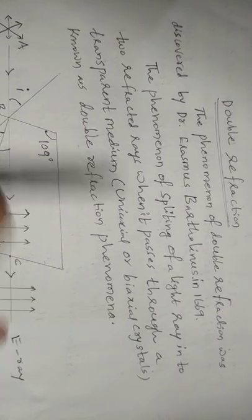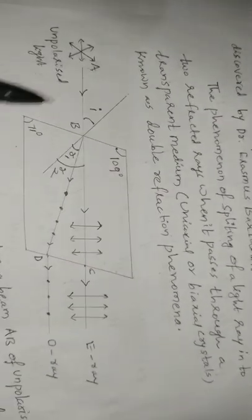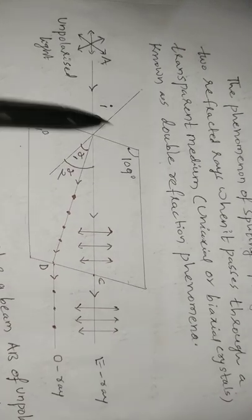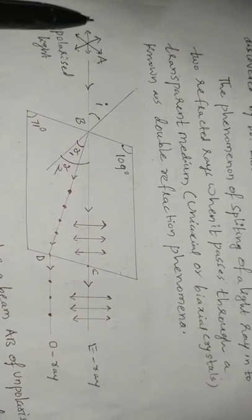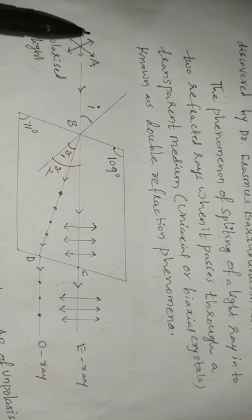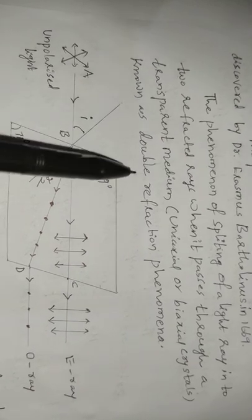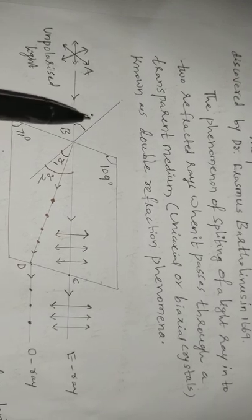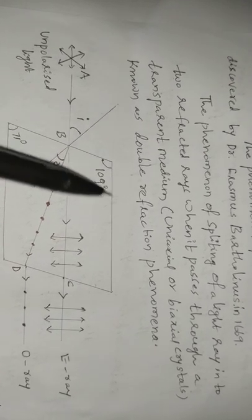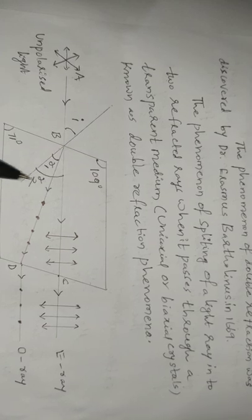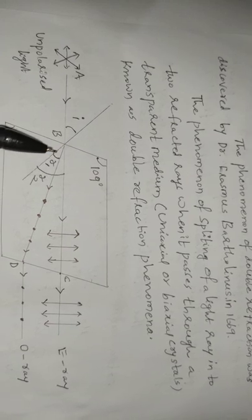We now discuss the double refraction phenomenon with the help of a calcite crystal. An unpolarized light ray AB is incident on a calcite crystal at an angle of incidence i. Inside the calcite crystal, the light ray splits into two light rays due to double refraction.